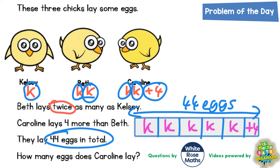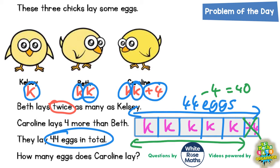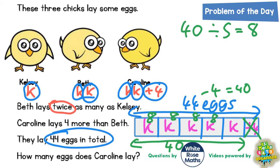The obvious thing to do now is to knock off this extra plus four at the end. If you knock off the plus four, you need to knock off four from 44, and that leaves 40. So these five K's must be worth 40. If five K's are worth 40, you split 40 into five to get what one K is worth. 40 divided by five equals eight, so each K is worth eight.